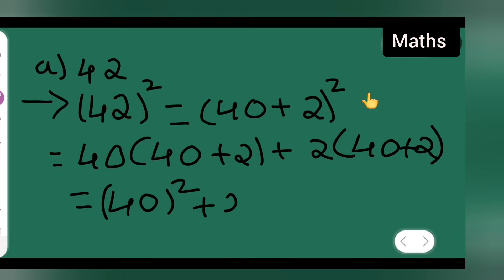Plus 2 multiplied by 40, plus again 2 multiplied by 40, plus 2 square. So here what you have done is 40 into 40 square plus 2 into 40 plus 2 square.